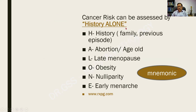Here is a mnemonic I picked up — cancer risk can be assessed by history ALONE: H for history or previous episode, A for abortion and age, L for late menopause, O for obesity, N for nulliparity, and E for early menarche. This is a useful mnemonic for remembering the risk factors for breast cancer.